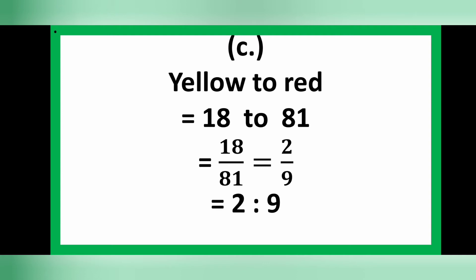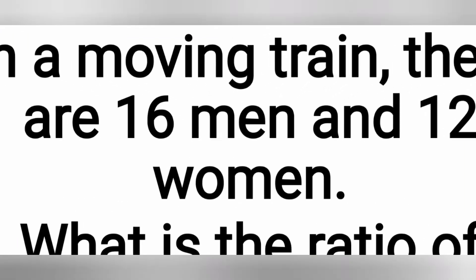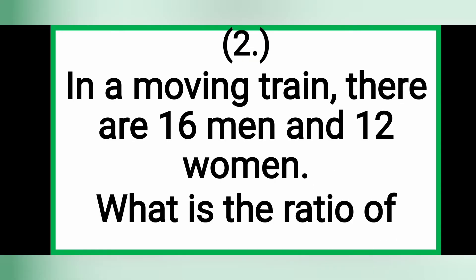The third part is to find the ratio of yellow to red. From the table, 18 persons are wearing yellow shirts and 81 persons are wearing red shirts, so the ratio is 18 to 81. Written as a fraction: 18 over 81. Since 9 divides both numbers — 18 divided by 9 is 2, and 81 divided by 9 is 9 — the ratio simplifies to 2 to 9.